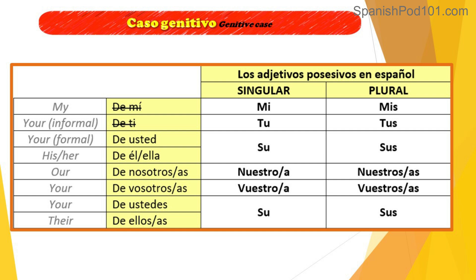If you want to say 'your' formal, or establish that formal relationship, we have to say 'de usted,' 'de él,' or 'de ella' — of you formal, of him, or of her. But if you want to use the possessive adjective and say 'her' or 'his,' we say 'su.' So 'su' means your formal, his, and her. And 'sus' is the plural form, also meaning your formal, his, and her.